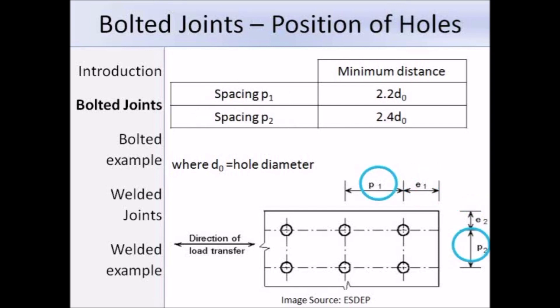P1 is the spacing between centres of bolt holes in the direction of load transfer; the minimum distance is 2.2 D0, where D0 is the hole diameter. P2 is the spacing between centres of bolt holes perpendicular to the direction of load transfer; the minimum distance is 2.4 D0. These minimum distances have been extracted from Table 3.3.